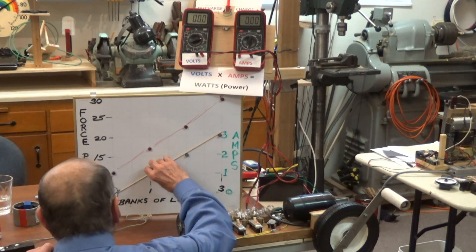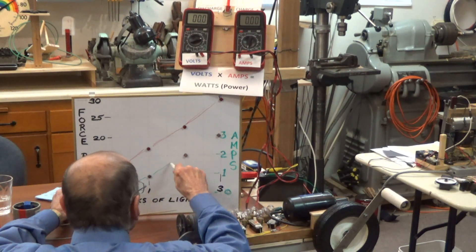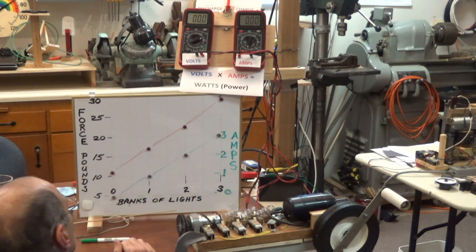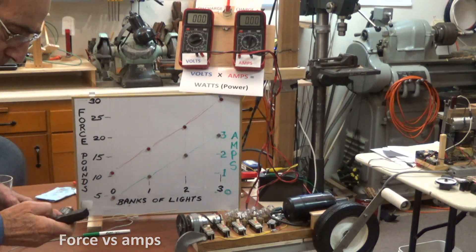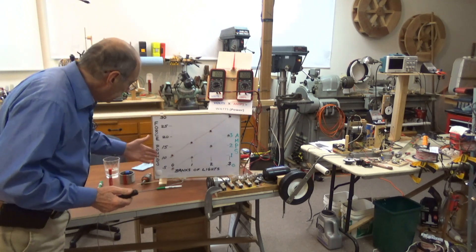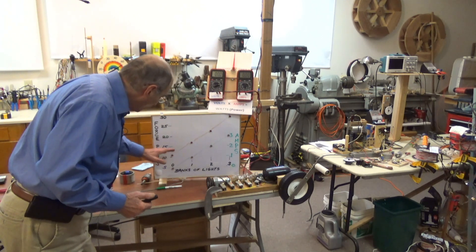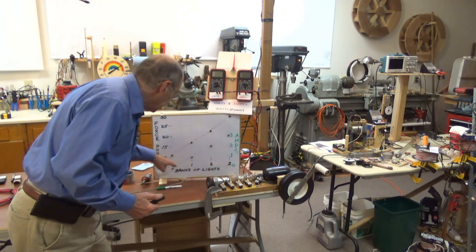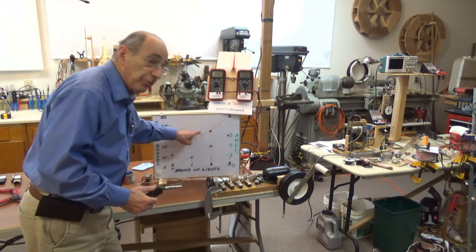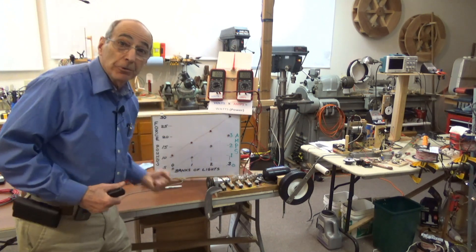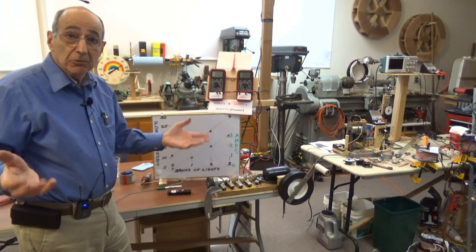Again, we're getting a nice straight line. Look at our relationship, it's nice and linear. We start up here kind of high because of friction, but then once we start flowing electricity, it's proportional to how many banks of lights we have on, and so is the amperage. It shows you that as I increase the amperage, it's harder to turn. The more electricity that flows, the harder it is for me to turn the generator.